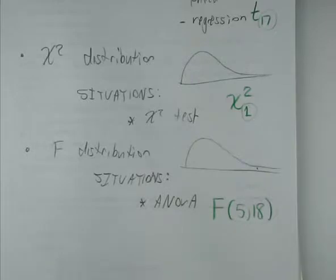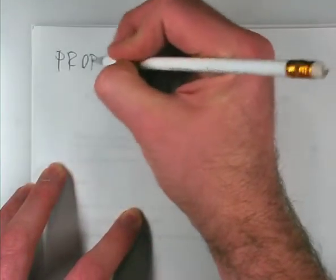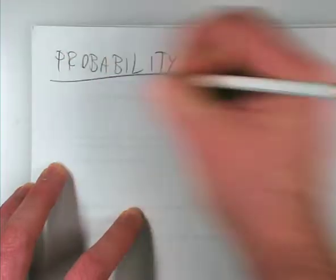So, that's distributions. There's the idea that no matter what you do, any number you could possibly calculate has a probability distribution to go with it, and you can therefore figure out how likely it is or how likely it is to fall within a certain range. Now I'll talk about probability. So, there are certain outcomes in your variable — it might come out to be 1, 2, 3, 4, or 5, and each of those is an outcome. For the normal distribution, there are infinitely many possibilities.